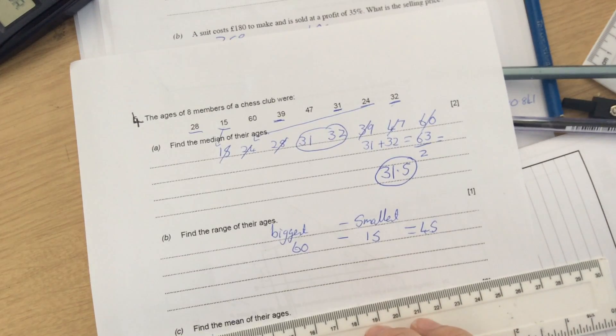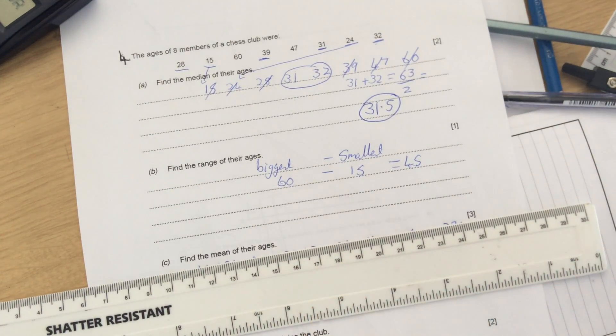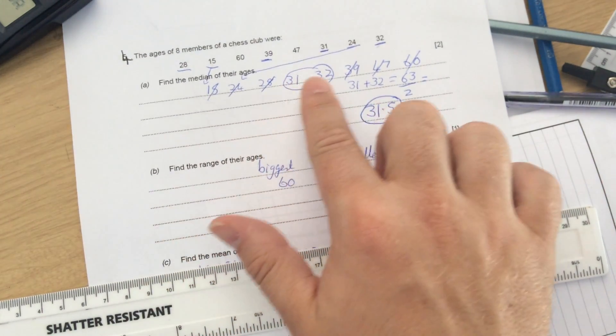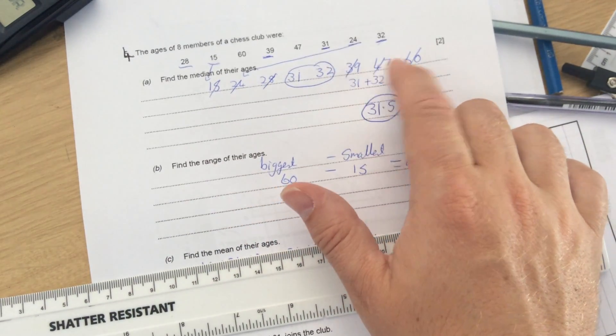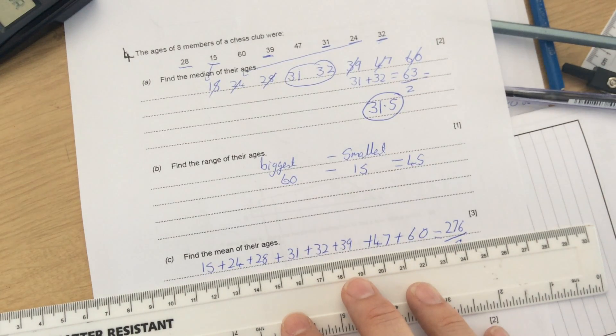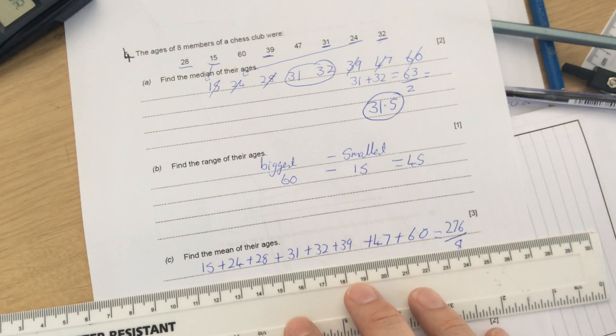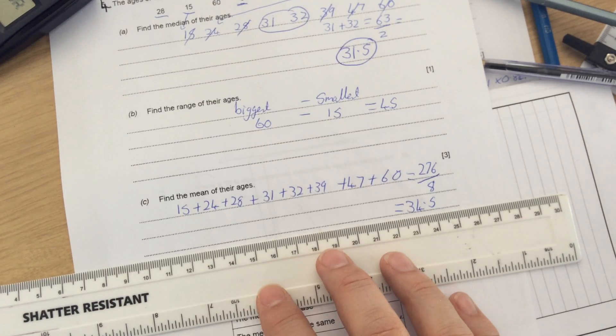And then the mean, to find the mean, you add them all up and divide by how many there are. So you'd be doing 15 plus 24 plus 28 plus 31 plus 32 plus 39 plus 47 plus 60. When you add them numbers up, it comes to 276. But there's eight members, so divided by eight, the mean there would be 34.5.